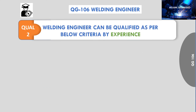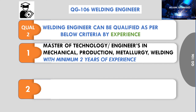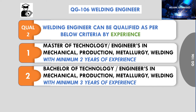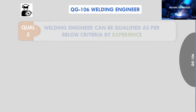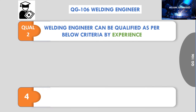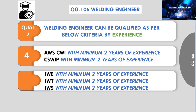Qualification 2: a welding engineer can be qualified by experience. M.Tech or M.E. in Mechanical, Production, Metallurgy, Welding, or a related field with a minimum of 3 years of experience; B.Tech or B.E. in Mechanical, Production, Metallurgy, Welding, or a related field with a minimum of 3 years of experience; Diploma in Mechanical, Production, Fabrication, or a related field with a minimum of 5 years of experience. With certifications like AWS CWI or CSWIP, a minimum of 2 years of experience is required. IWE, IWT, and IWS certifications also require a minimum of 2 years of experience.